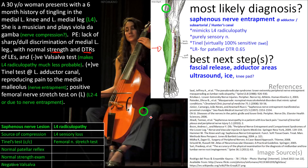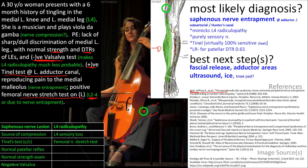With an L4 radiculopathy, you would expect patellar hyporeflexia and possibly quadriceps weakness, and potentially a positive Valsalva test in the setting of disc herniation. Tinel's test at the adductor canal is more evidence for peripheral nerve entrapment — tapping there triggers pain down the leg. The femoral nerve stretch test is classically for L2 through L4 nerve roots; however, in this case it appears to be a false positive, as nerve tension tests can be positive in peripheral nerve entrapments as well, making it somewhat misleading.